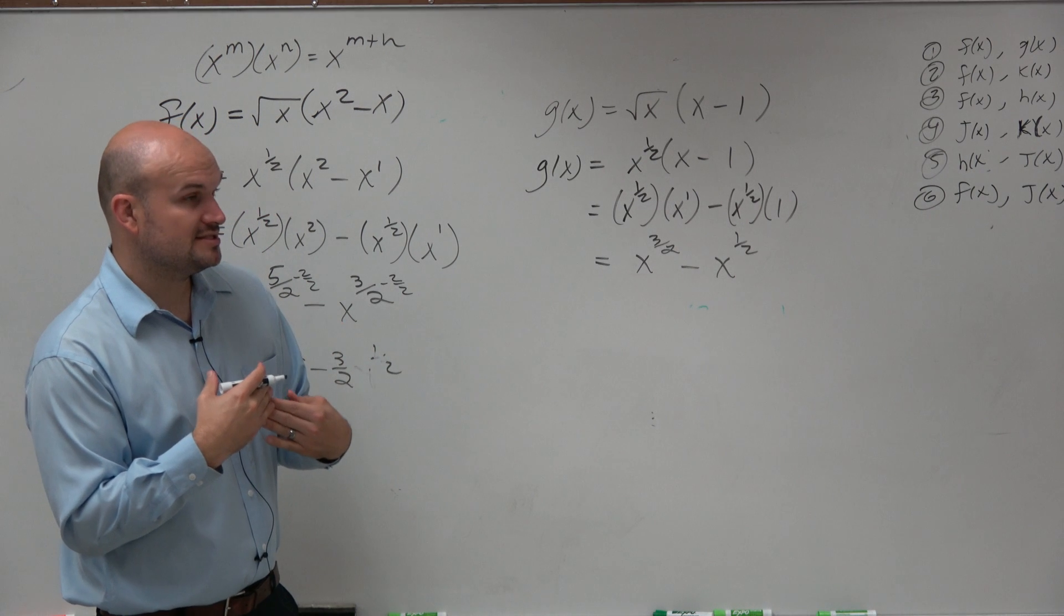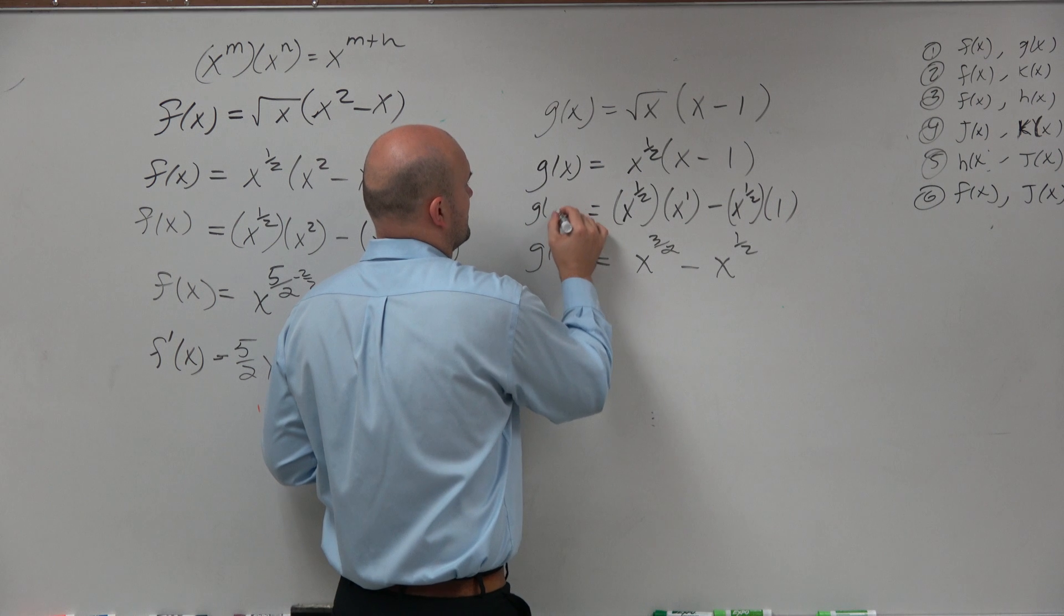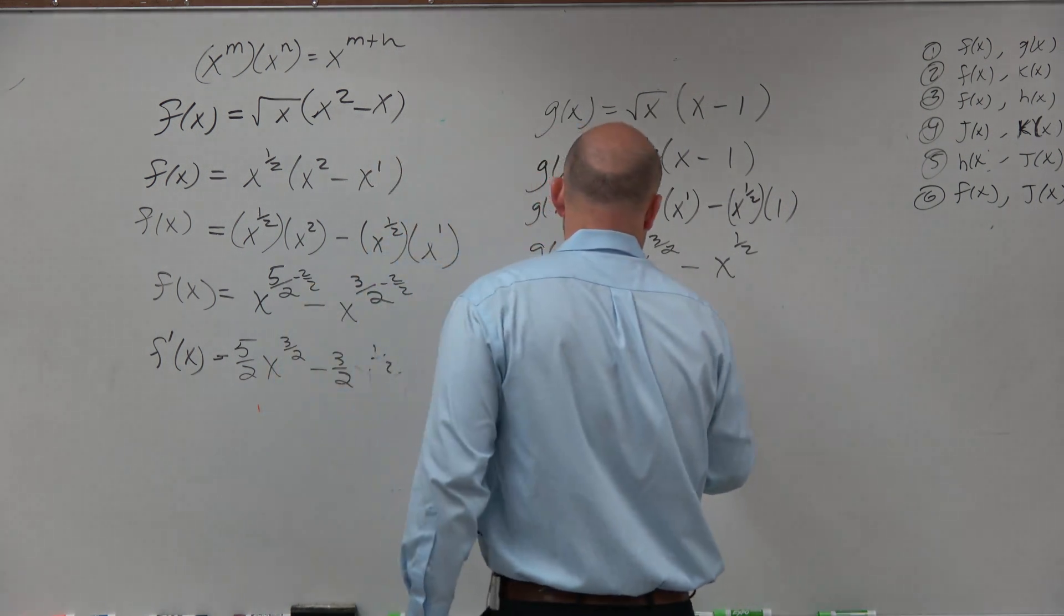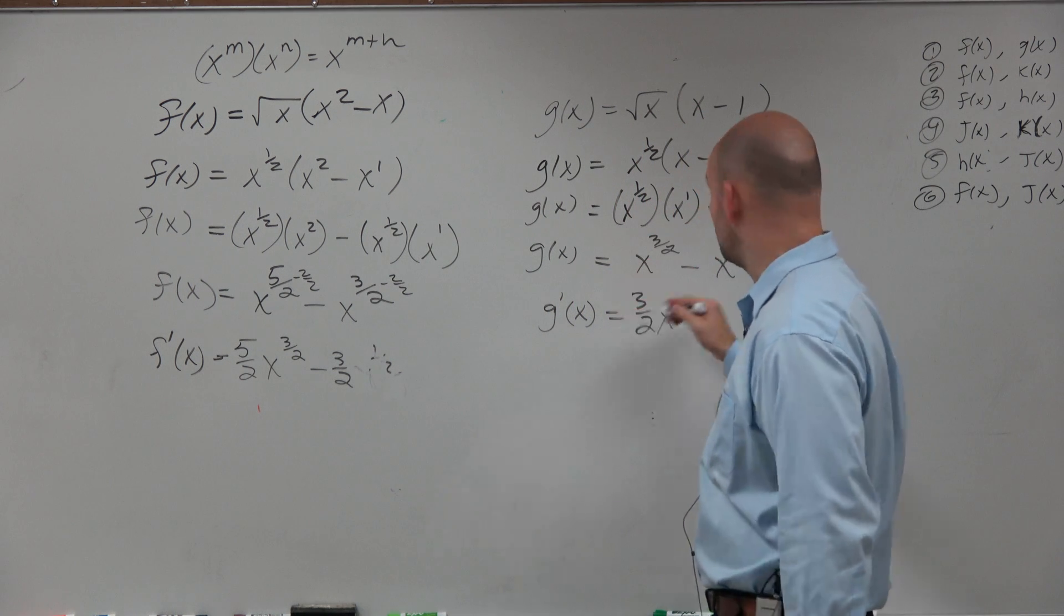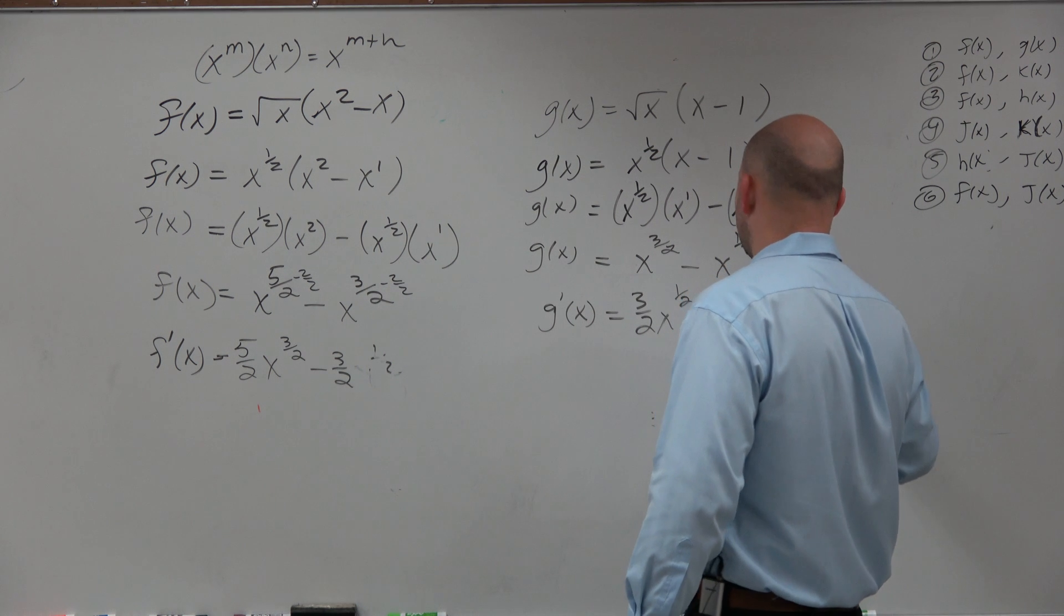Now, when we go ahead and simplify here—or I'm sorry, that's just g(x). Now, when we find the derivative, we're going to have 3/2 times x to the 1/2 minus 1/2 x to the negative 1/2.